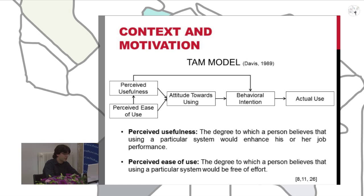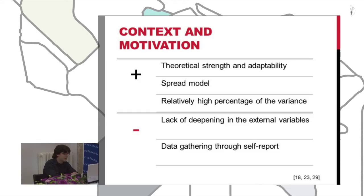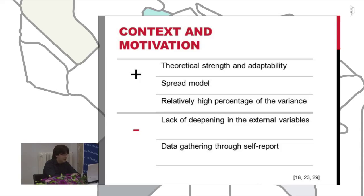The main advantages of the model are its empirical strength and adaptability, which makes it a much-used and well-explained model, whose reliability and validity are contrasted, and which explains a relatively high percentage of the variance. There are also disadvantages, like the lack of deepening in external variables and the data gathering through self-report, which can affect especially the measurement of actual use of the system.